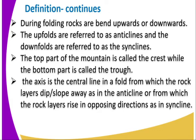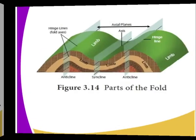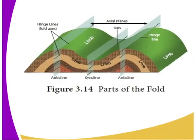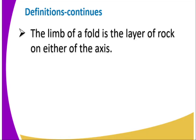In the anticline, the rock layers dip in opposing directions, as in the syncline. Looking at the diagram, you can see the axis, the limb, the syncline, and the anticline. The limb of a fold is the layer of rock on either side of the axis. The part on one side of the axis is what we refer to as the limb.